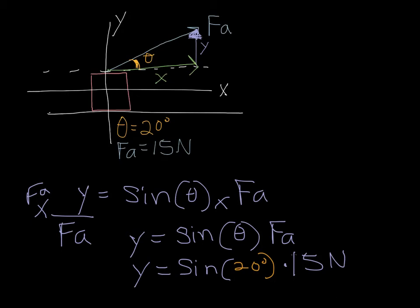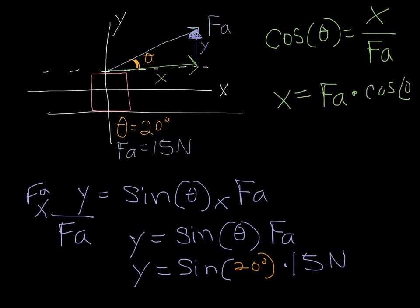And then if I want to find my x, it's a similar procedure. We know that cosine of theta will be equal to my adjacent side, which is x over my hypotenuse side, which is force applied again. And so again, if I multiply both sides by fa, I am going to get x is equal to fa times the cosine of theta.